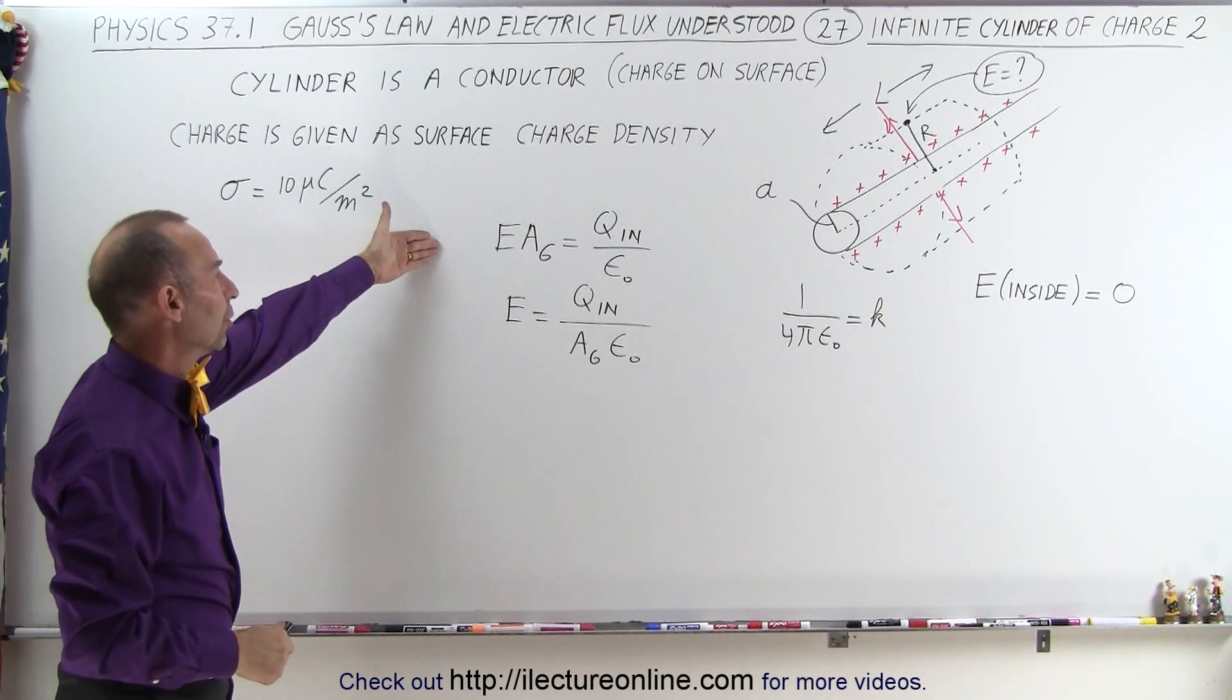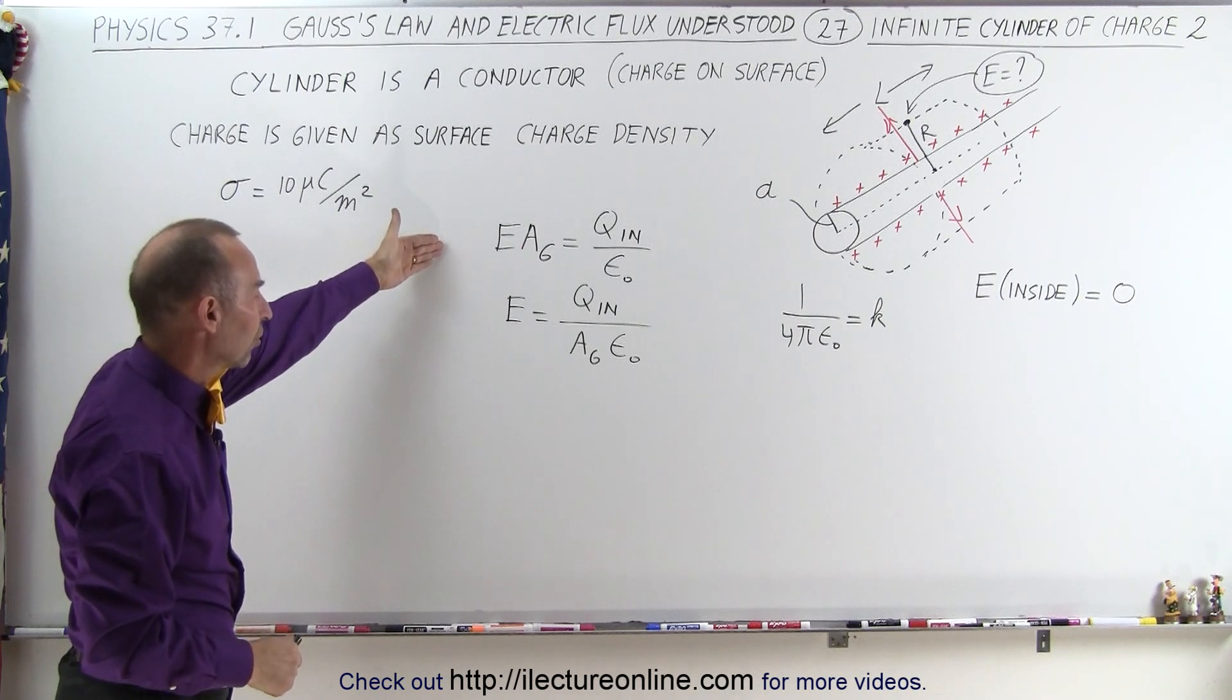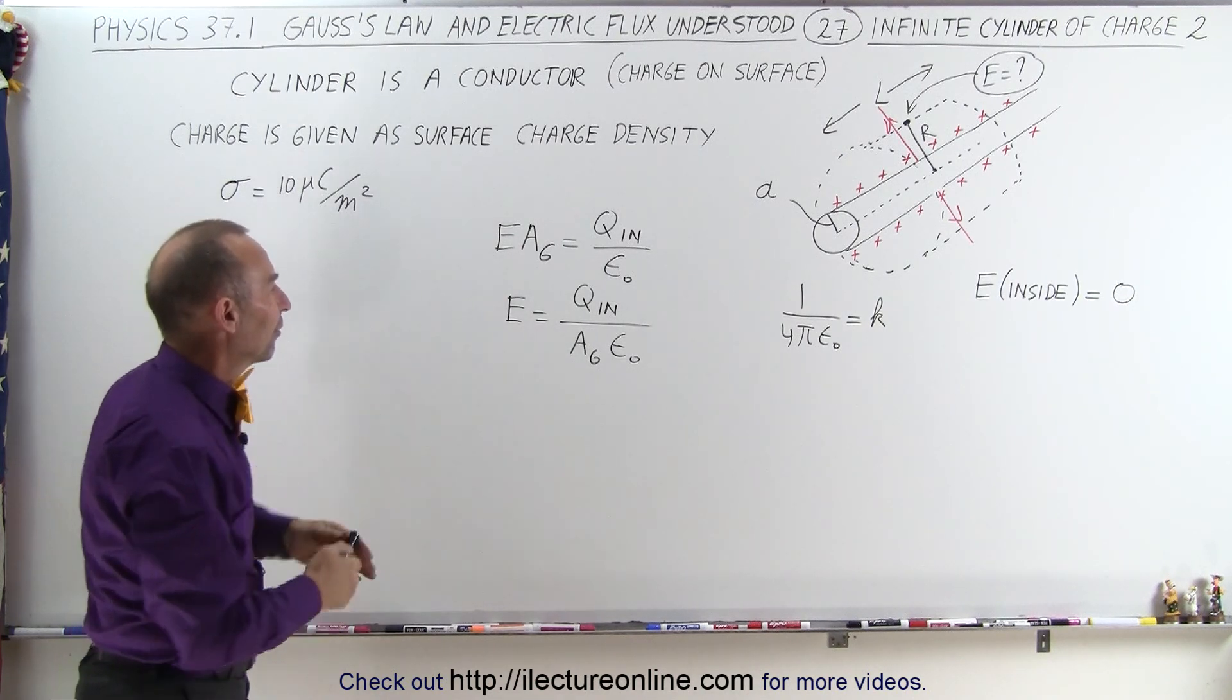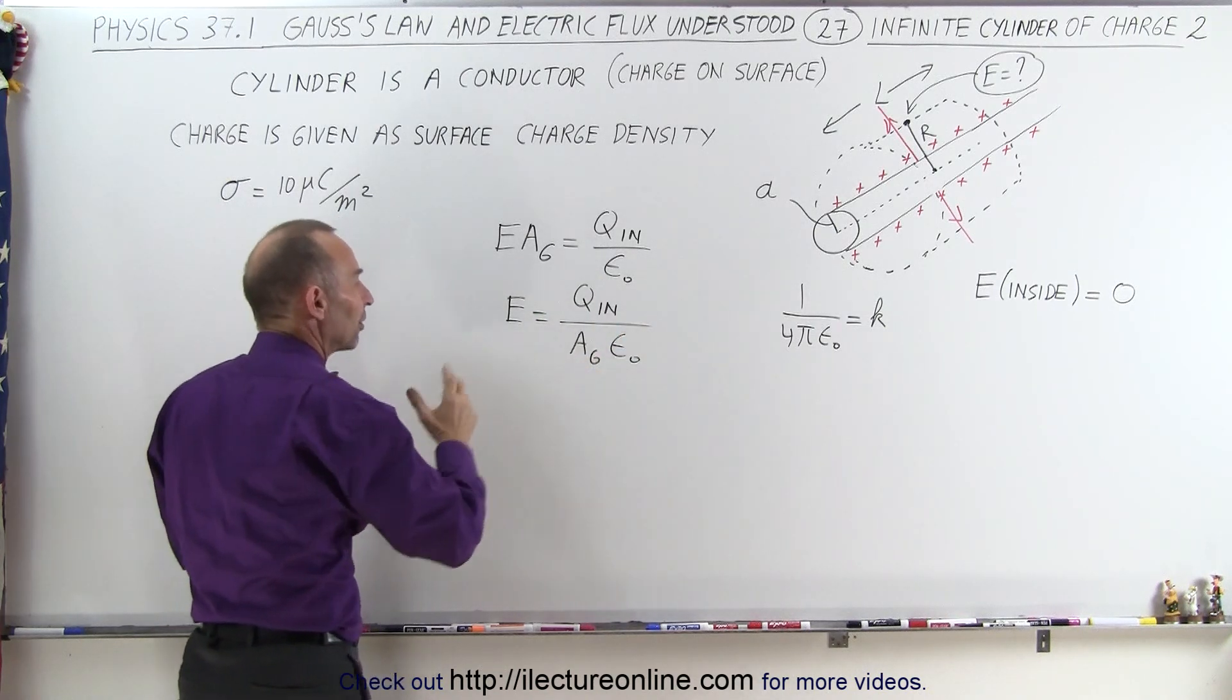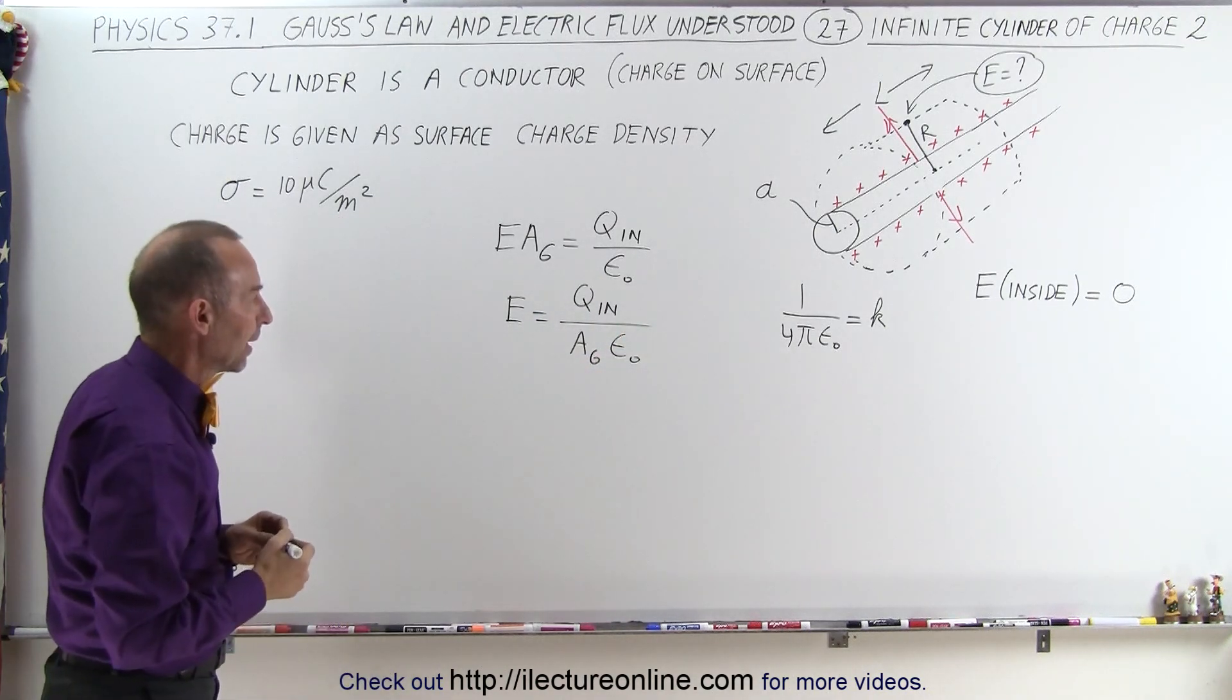Here we have Gauss's law, and then we solve that for E. Now we have to figure out what the Q inside is and what A, the surface area of the Gaussian surface is.